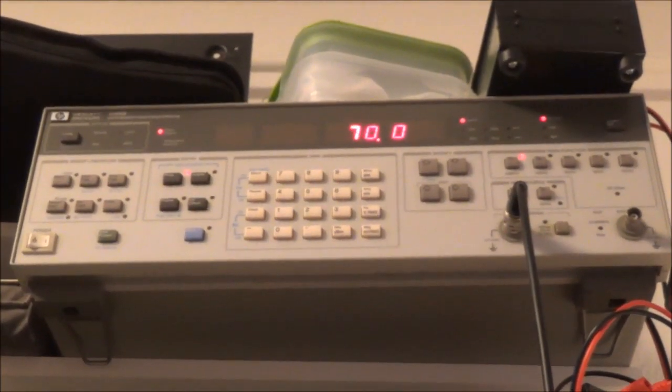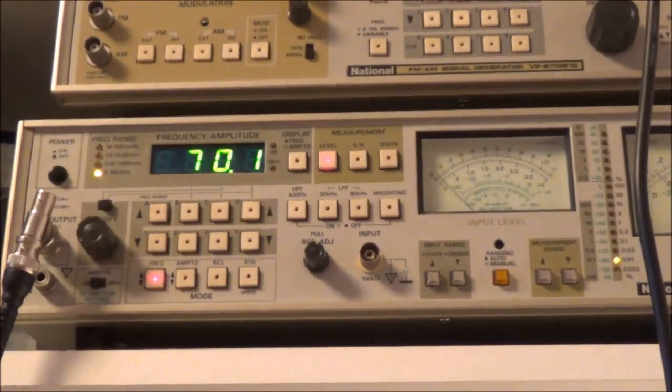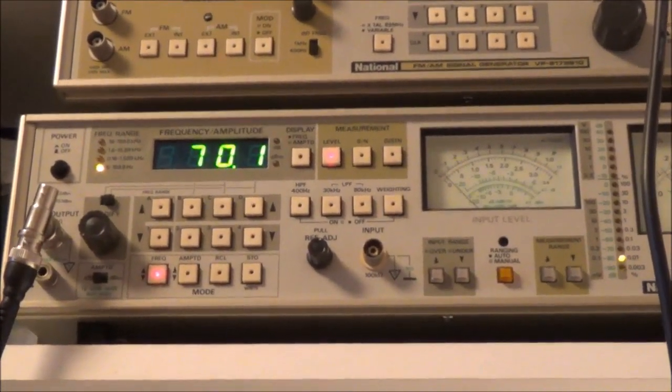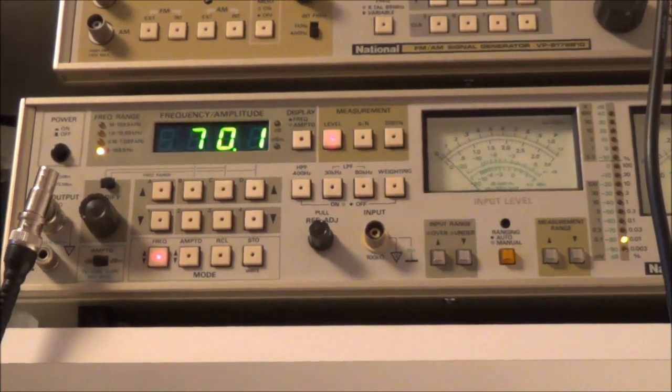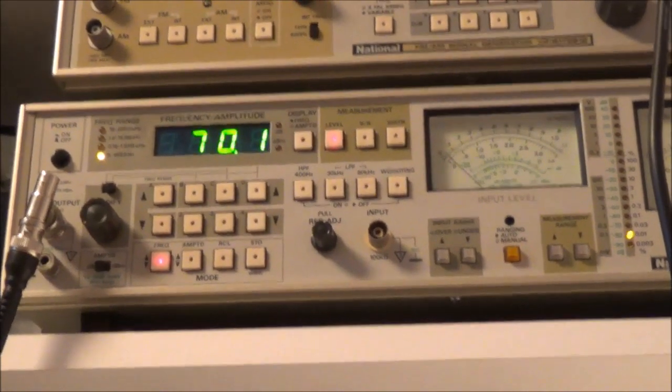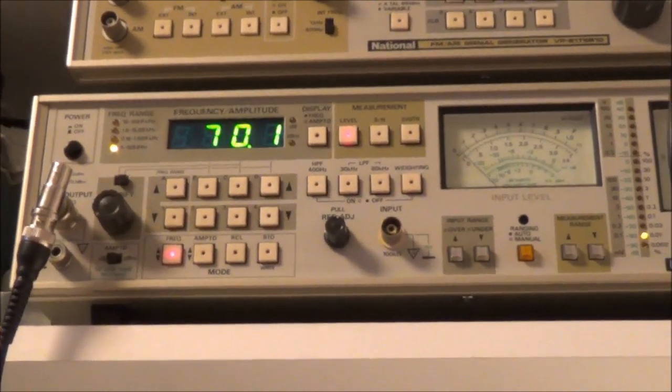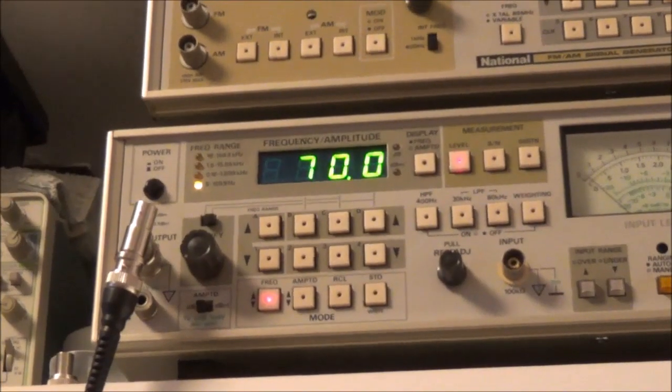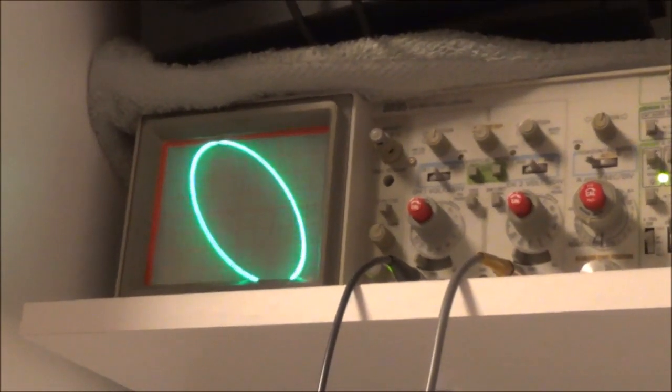Okay, now I've got the HP 3025 set up for 70 Hertz, and the oscillator output from my distortion meter, that's at 70.1. I actually have to get it down to 70. I don't know why it's on point one now. Let me adjust that. Okay, it's on 70 now.